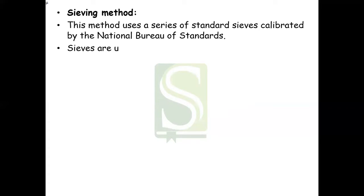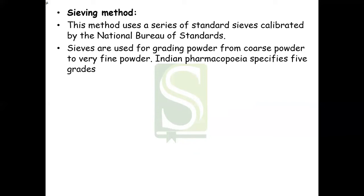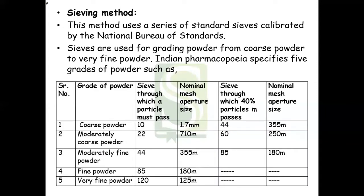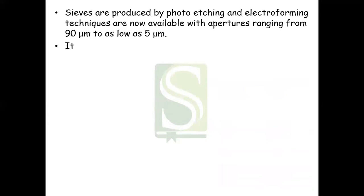The sieving method uses a series of standard sieves calibrated by the national bureau of standards. The sieves are used for grading powder from coarse to very fine. Indian Pharmacopoeia specifies five grades of powder: coarse powder, moderately coarse powder, moderately fine powder, fine powder, and very fine powder. For coarse powder, it must pass through sieve number 10 with aperture size 1.7 mm, and when passed through sieve number 44, not more than 40 percent of particles should pass. Definitions are based on sieve numbers through which powders must pass.